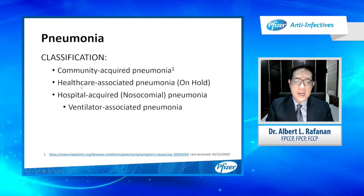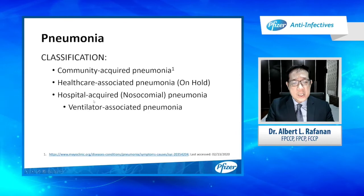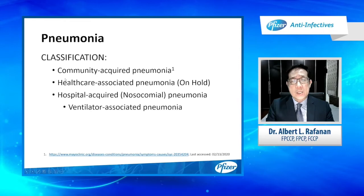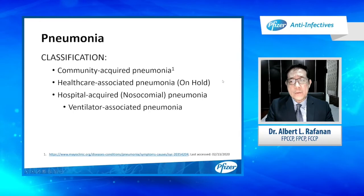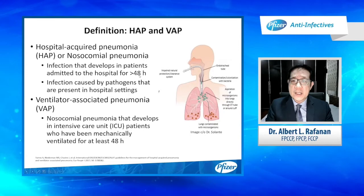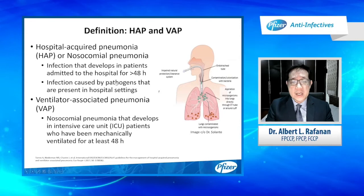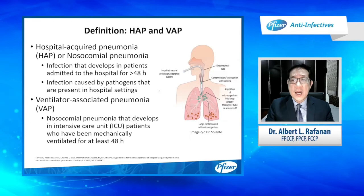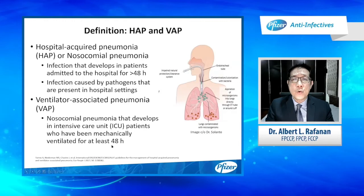There are three types of pneumonia: community-acquired pneumonia, healthcare-associated pneumonia — which is currently on hold, and we will discuss why — and hospital-acquired pneumonia. Under hospital-acquired pneumonia is ventilator-associated pneumonia. Community-acquired pneumonia is pneumonia acquired in the community. Hospital-acquired or nosocomial pneumonia refers to infections that develop in patients admitted to the hospital for more than 48 hours, caused by pathogens present in the hospital setting. Ventilator-associated pneumonia occurs in the ICU in patients who have been intubated for at least 48 hours.